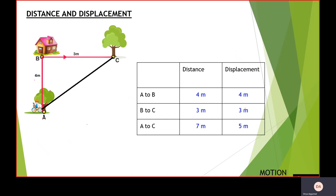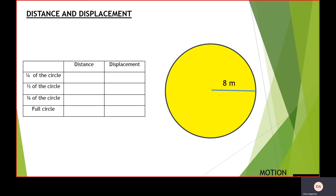Next, we have a circle with a radius of 8 meters. The cases are one-quarter, half, three-quarters, and full circle. I'll label the points: A at one-quarter, B at half, C at three-quarters, and D at the full circle. The distance traveled follows the perimeter. The perimeter of the whole circle is 2πr, and with radius 8 meters, the full perimeter is 16π meters.